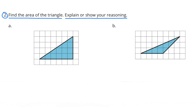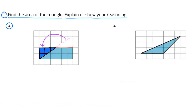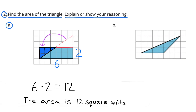Find the area of the triangle. Explain or show your reasoning. I decided to decompose this triangle by removing a section and rearranging it so it becomes a rectangle. Now that I have a rectangle, I can easily see that the base is 6 and the height is 2. 6 times 2 is 12. The area of this rectangle is 12 square units, and the area of the triangle is 12 square units, because the rectangle was made out of the same parts as the triangle.